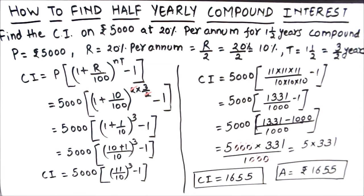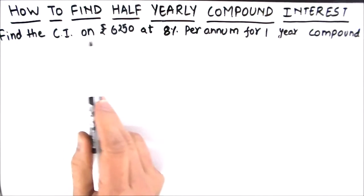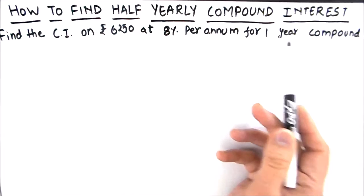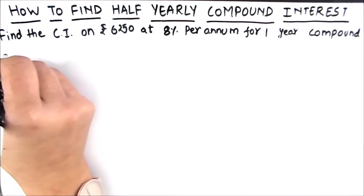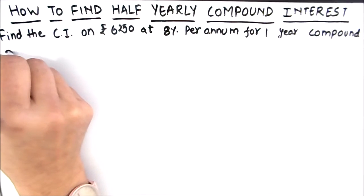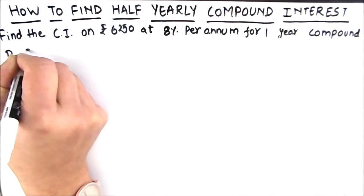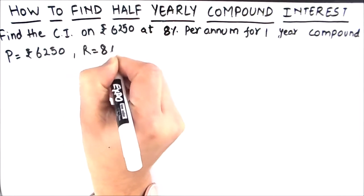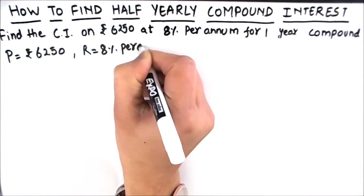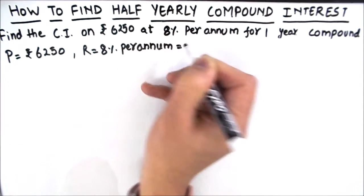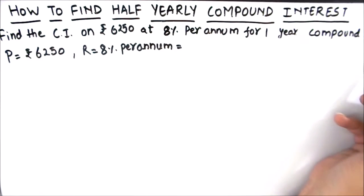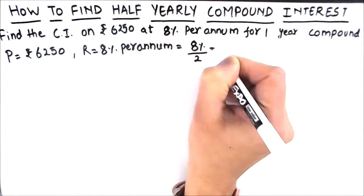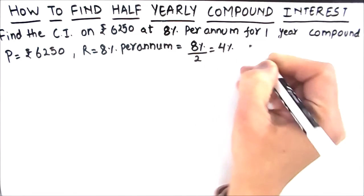Let's solve one more example. Our second question is: find the compound interest on Rs. 6,250 at 8% per annum for one year, compounded half yearly. Principal = Rs. 6,250. Rate of interest = 8% per annum. Per annum means per year, but we have to find compound interest half yearly, so the rate becomes 8/2 = 4% per half year.